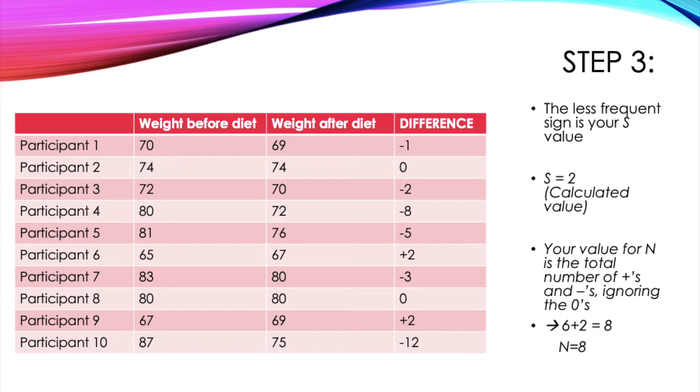And then your value for N isn't simply just the number of participants you had, because for this what you need to do is ignore any no differences, which again were indicated by zeros. So you can either add up the positives and negatives or you can take the number of participants and take away the number of no differences. Either way, you'll find that our N value is 8.